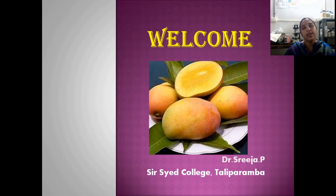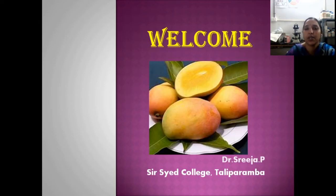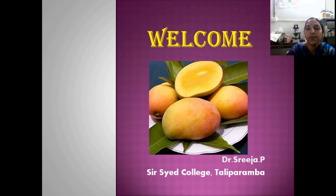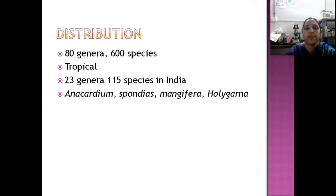Welcome back. We are now moving on to our next family, Anacardiaceae. By looking at this picture, you can see which among our common economically important plants belongs to this family. This is the mango family, also known as the cashew family. It is distributed worldwide with about 600 species and 80 genera, tropical in distribution.